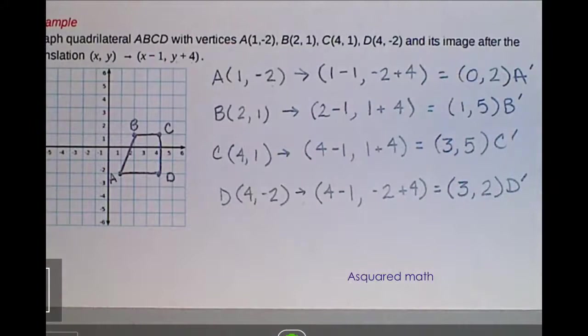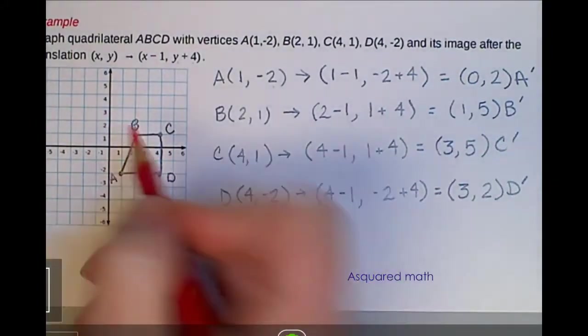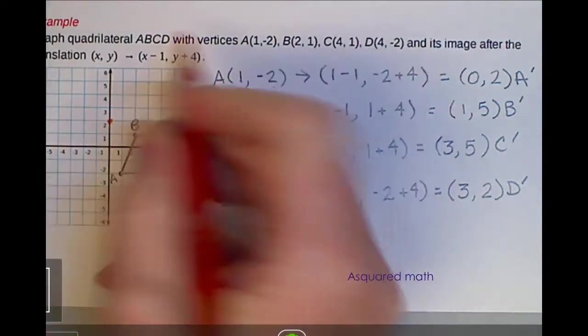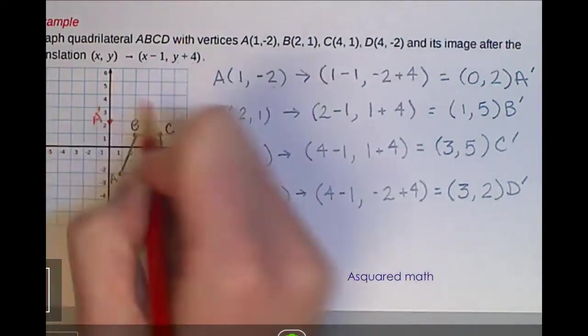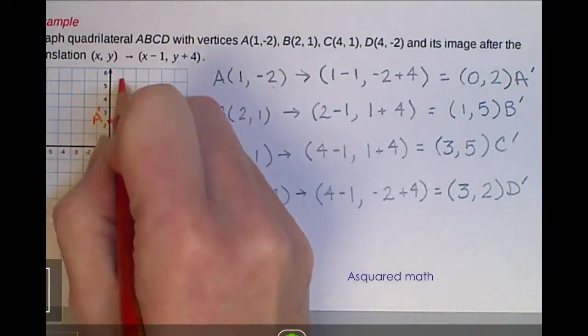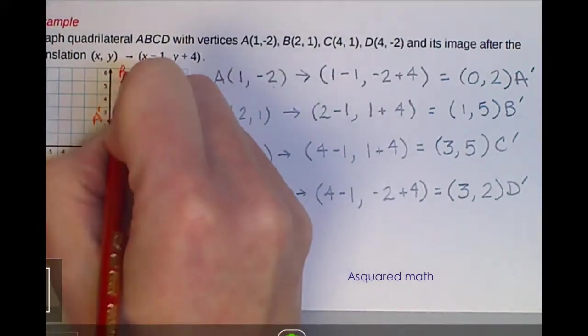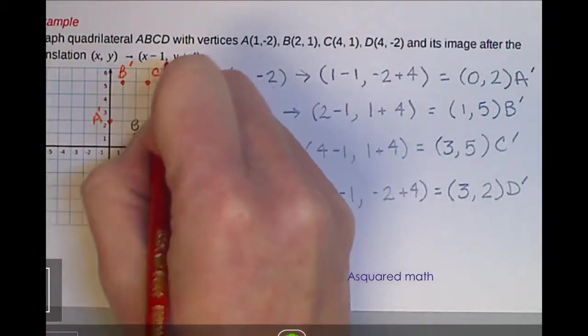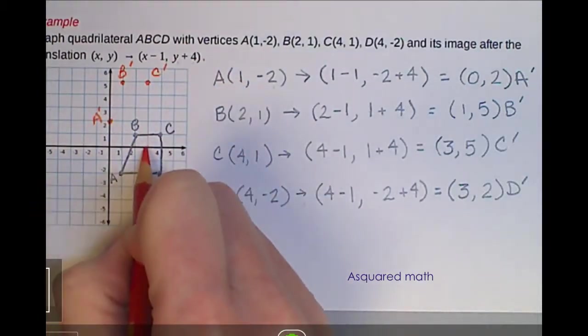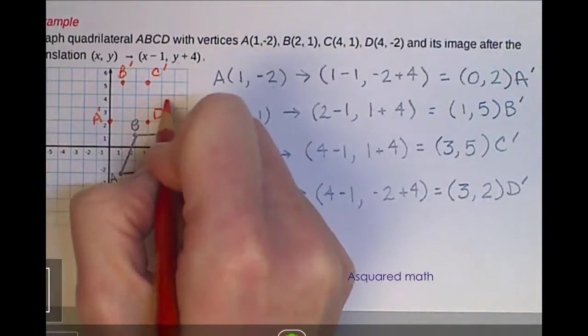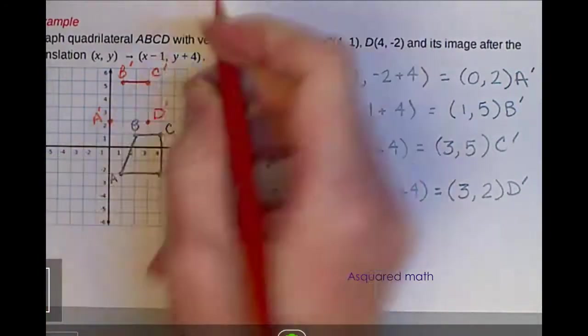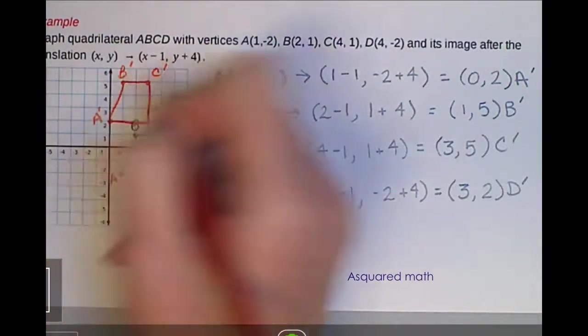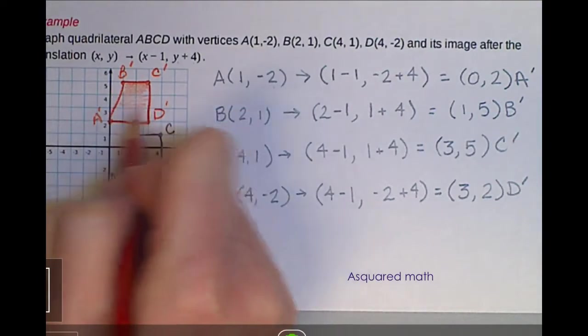If we plot these 4 points on our coordinate system, A prime is over 0, up 2, B prime (1,5), C prime is (3,5), and D prime is (3,2). Connect all of your points. And that is our final image.